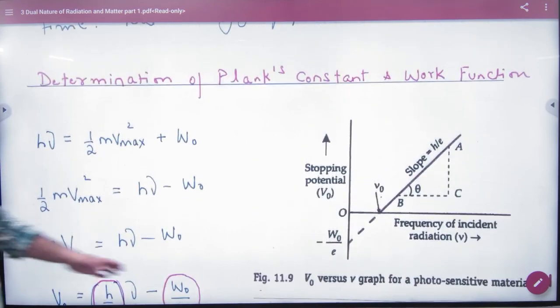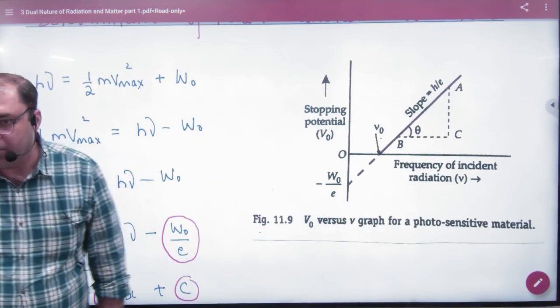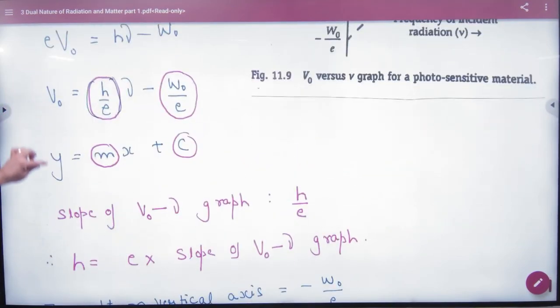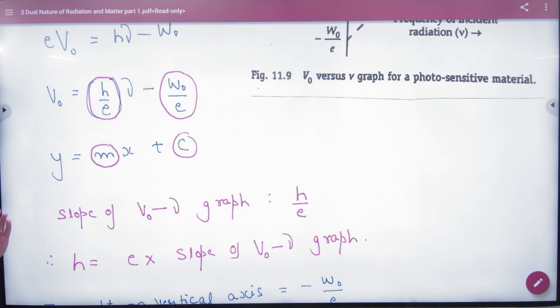If I plot a graph, y-axis is stopping potential and x-axis is frequency. So V₀ corresponds to y-axis and frequency corresponds to x-axis. This is constant, and this is slope, and this is intercept. So this is the math equation y equals mx plus c.